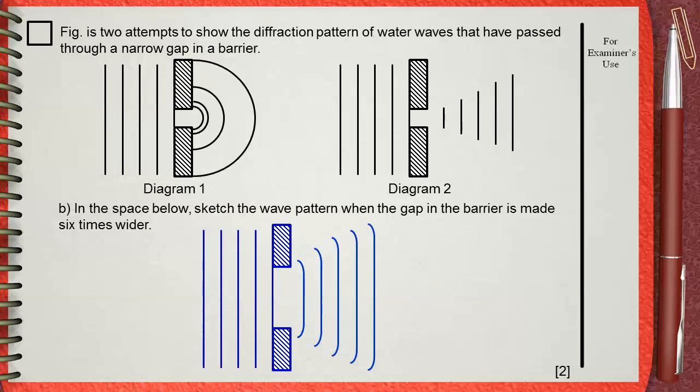The wave fronts become bigger as we go away from the gap, but they are still curved from the ends. This is when the gap becomes wider.